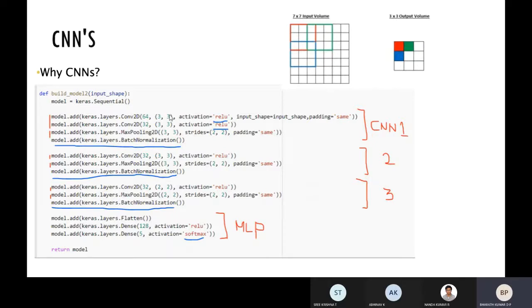In the first convolutional layer, we're using 64 filters, each 3x3, with ReLU activation function. Then repeating with 32 filters, doing max pooling to reduce dimensions, and batch normalization to normalize the output from one layer to another. This unit is repeated - we're using 3 convolutional neural network units and an MLP at the end to flatten it, with softmax function to show the probabilities of each class.